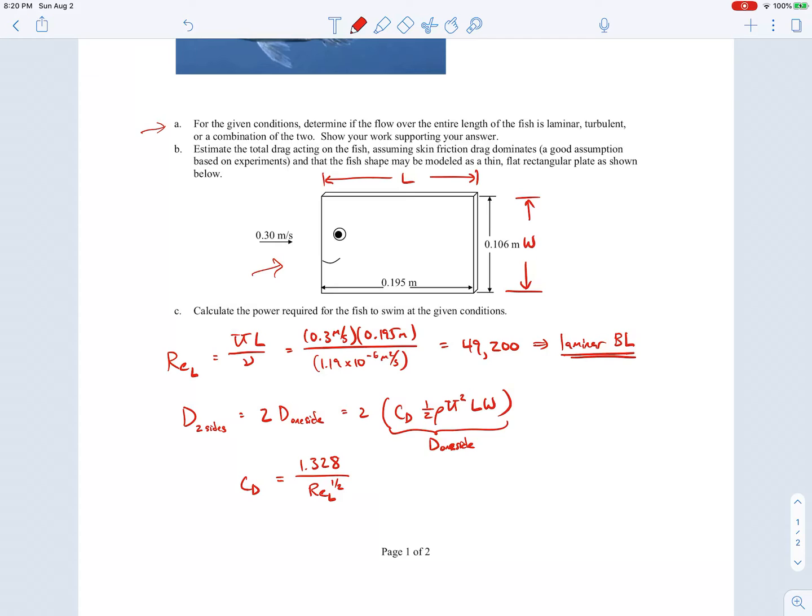That's how you'd find the drag coefficient. If you use that Reynolds number we calculated up here of 49,200 and plug that in, you'll get that the drag coefficient is 5.99 times 10 to the minus 3.